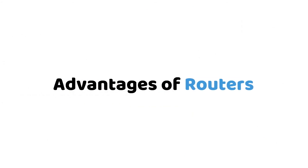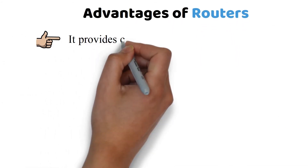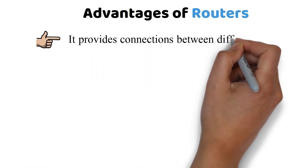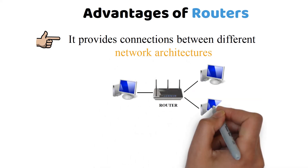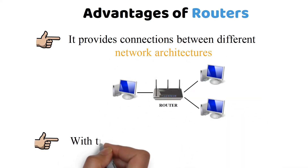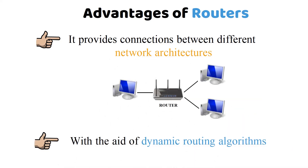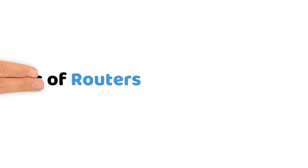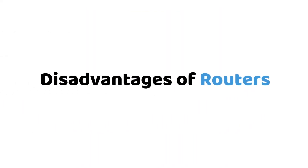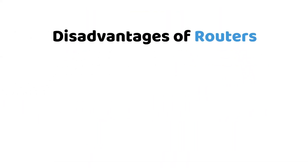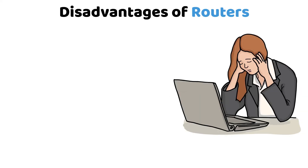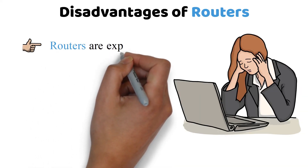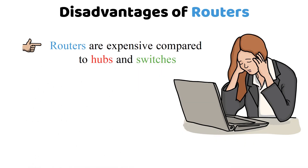Advantages of routers: Routers provide connections between different network architectures, and with the aid of dynamic routing algorithms, they can choose the best path in the internetwork. Disadvantages: Routers are slower because they need to analyze data, they are expensive compared to hubs and switches, and they have low bandwidth because of their dynamic router communication.